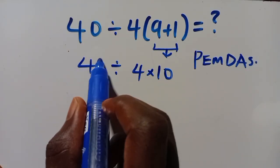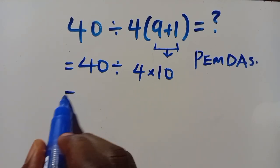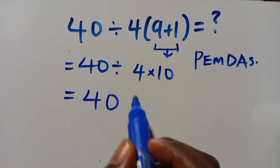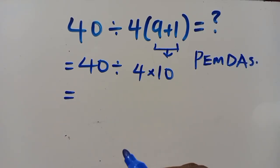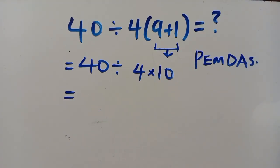Now we have 40 divided by 4 times 10. Let us note that division and multiplication have the same priority, and we must start from the left side. So we're going to have 40 divided by 4...